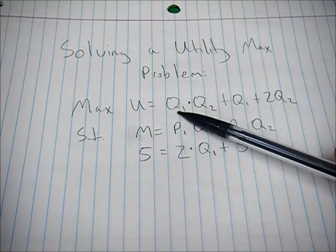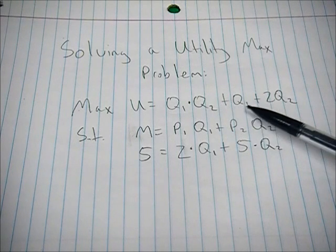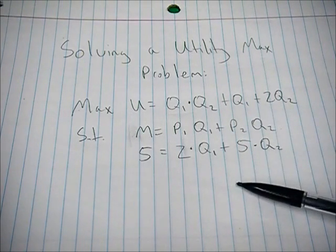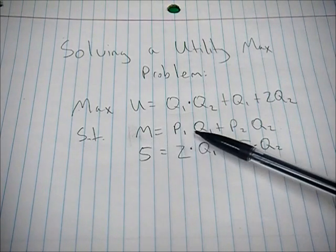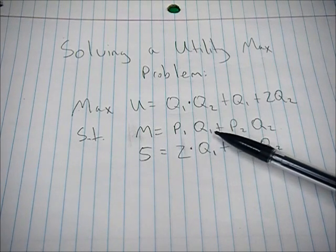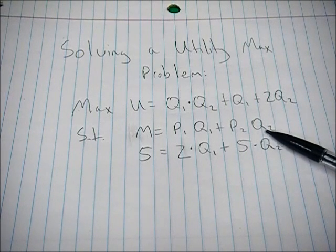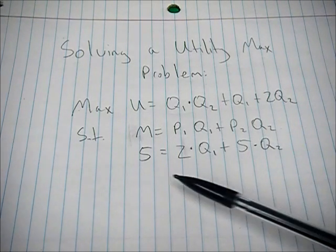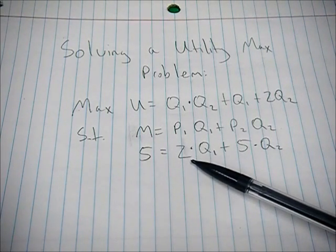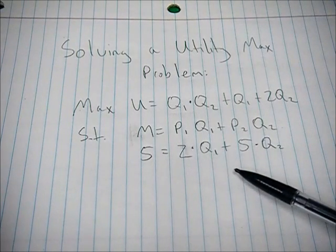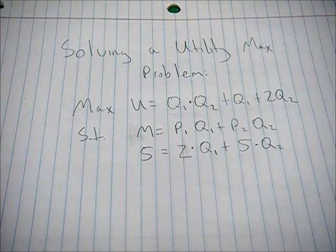We're going to solve this utility max problem where the utility function is q1 times q2 — so they interact with each other — plus q1 plus 2q2. This is subject to the budget constraint where income equals the price of good one times q1 plus the price of good two times q2. In this problem, income is five dollars, the price of good one is two dollars, and the price of good two is five dollars.